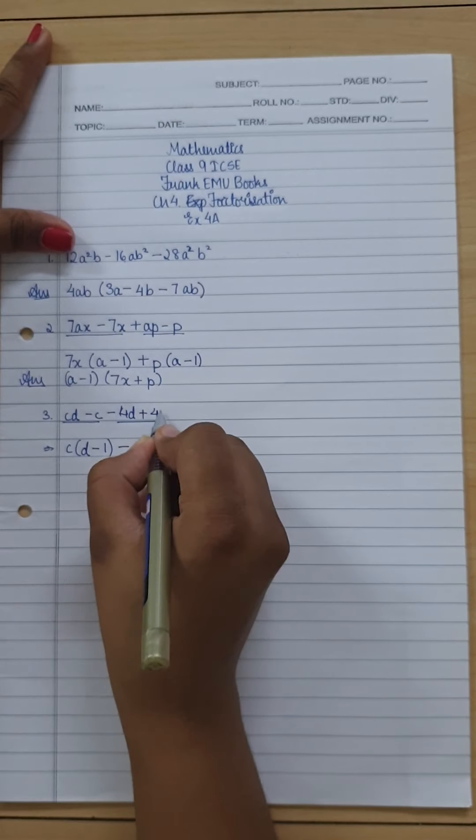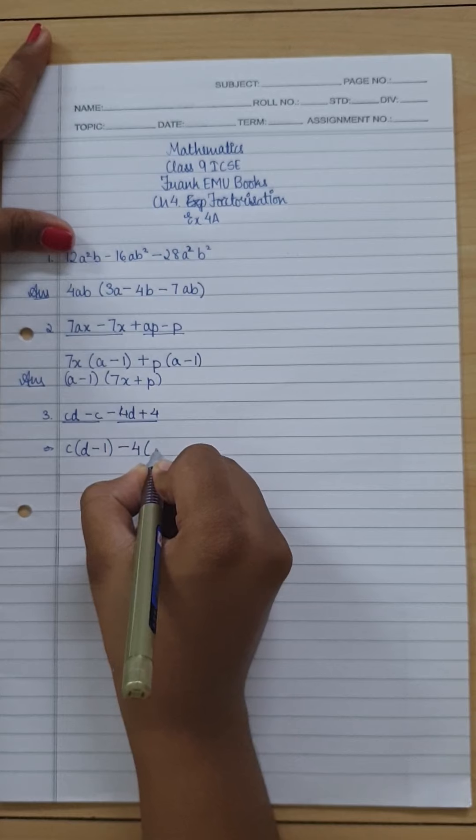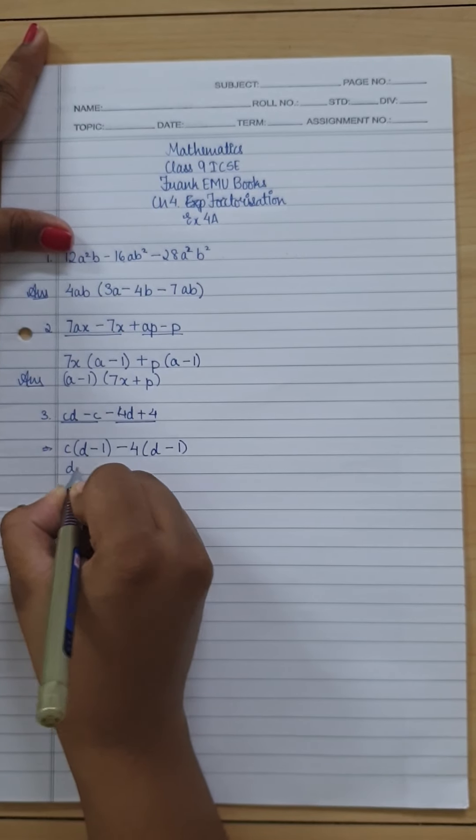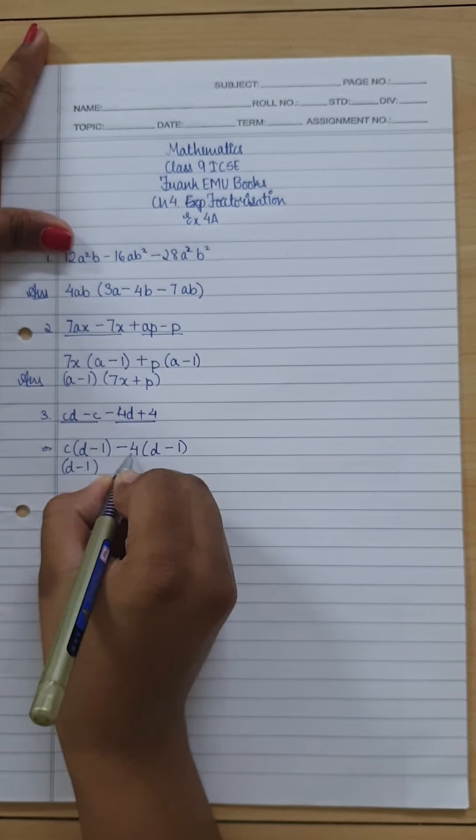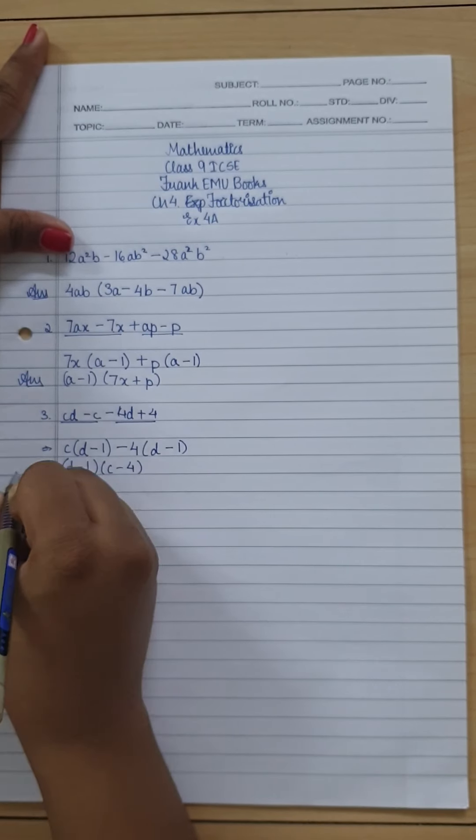Again minus, we have 4 over here, so 4, and I am having d - 1. I take the common d - 1 together, and then we club c and -4, that is c - 4 together, and there we are having the answer for our third question.